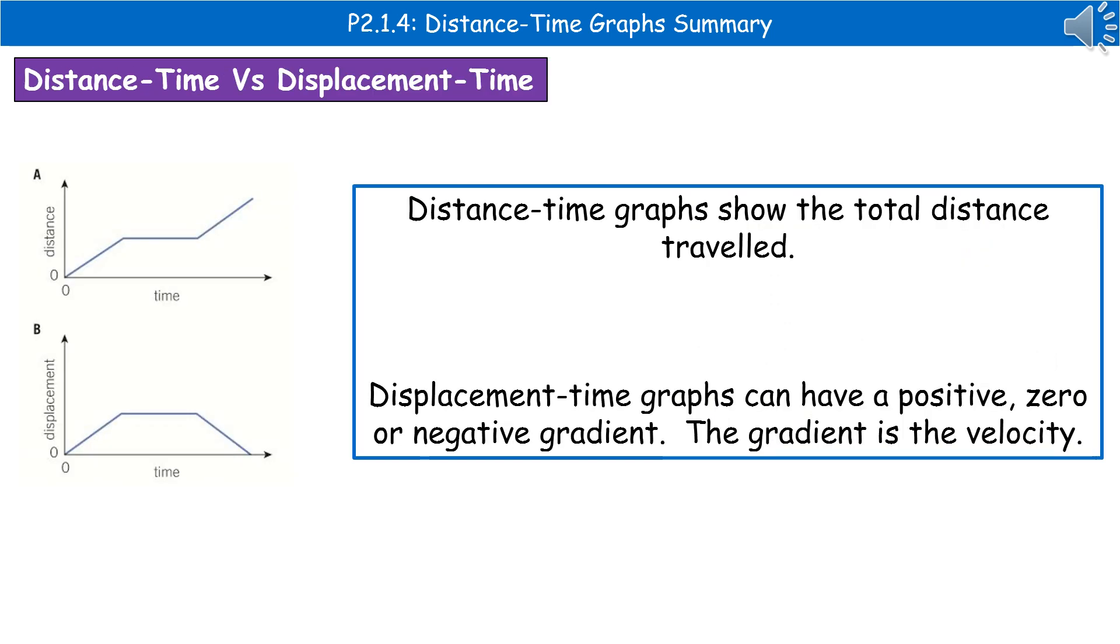The second type of graph we could see here is a displacement time graph. The only way you're really going to identify the difference between them is by looking at the y-axis label. You've got a distance time graph at the top and a displacement time graph at the bottom, and what we actually have represented by them is different.